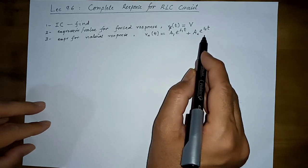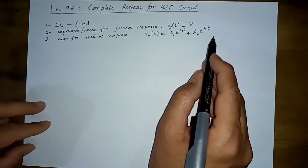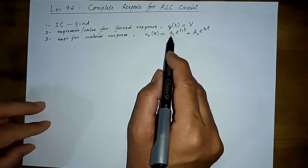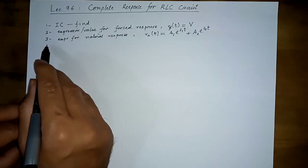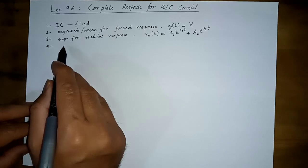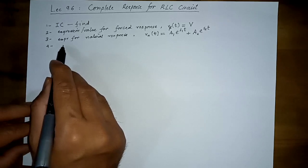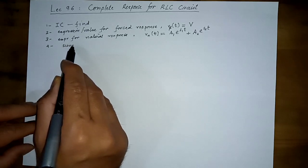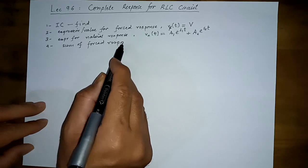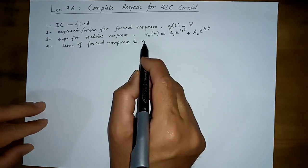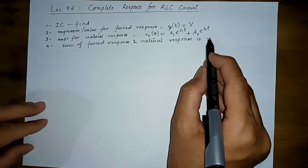We must know whether the circuit is over-damped, critically damped, under-damped, or undamped. For example, if it is over-damped, the natural response would be of the form with exponential terms. We determine this by finding alpha and omega-0: if alpha is greater than omega-0 the circuit is over-damped. The overall complete response is the sum of the forced response and the natural response.